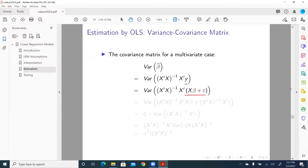Then what we're gonna do is use the distributive law to get out X beta and epsilon. So X prime X inverse X prime, multiply first by X beta, we get the first term. Then multiply by epsilon, we get the second term.